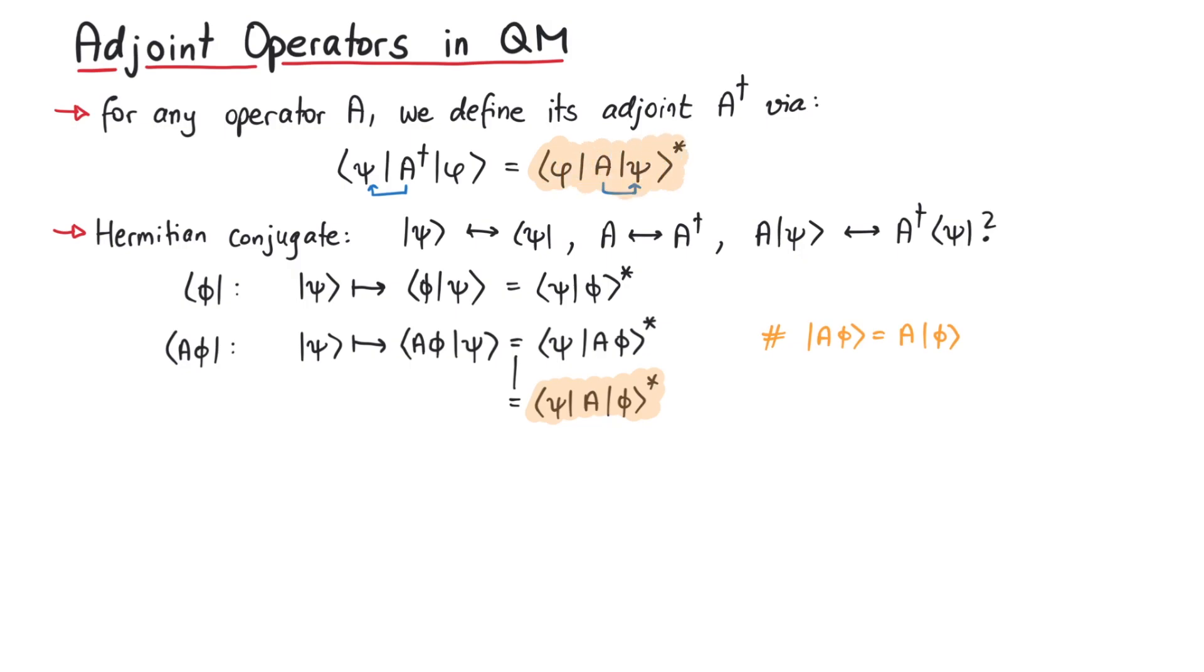And this expression looks like the one in the definition of the adjoint operator. Therefore, we can write this as phi A dagger psi. And we finally have our answer. So, taking the Hermitian conjugate of A psi yields psi A dagger.